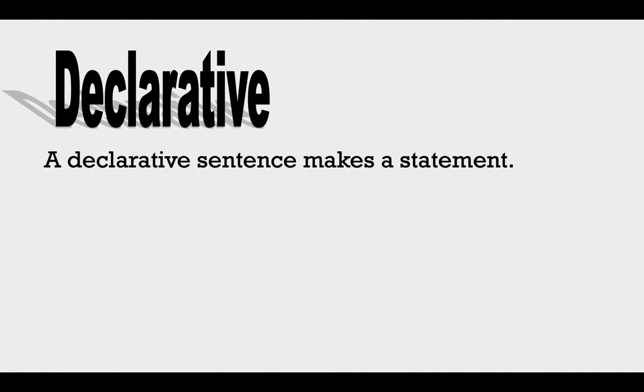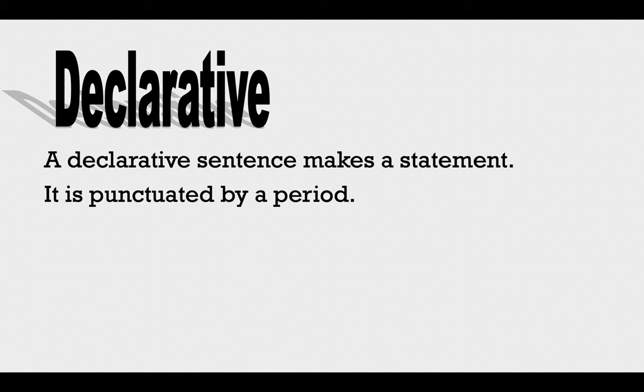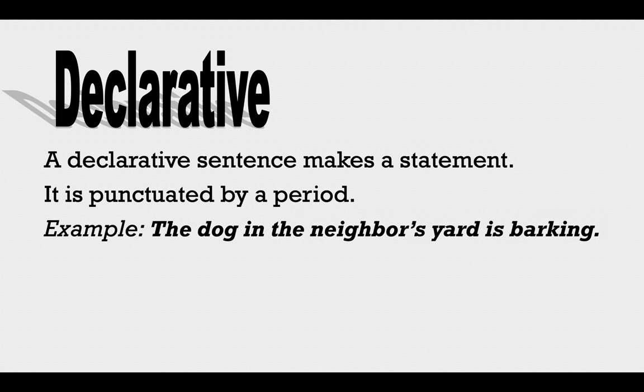A declarative sentence makes a statement. It is punctuated by a period. Example: the dog in the neighbor's yard is barking.